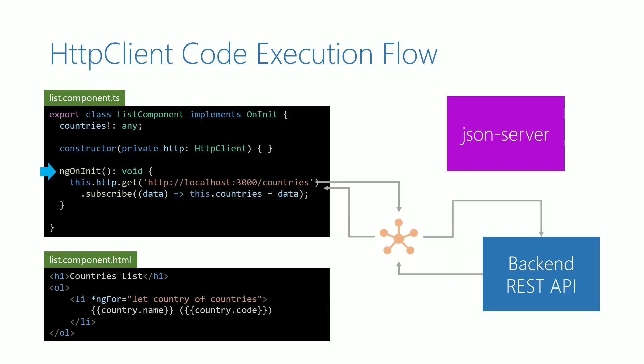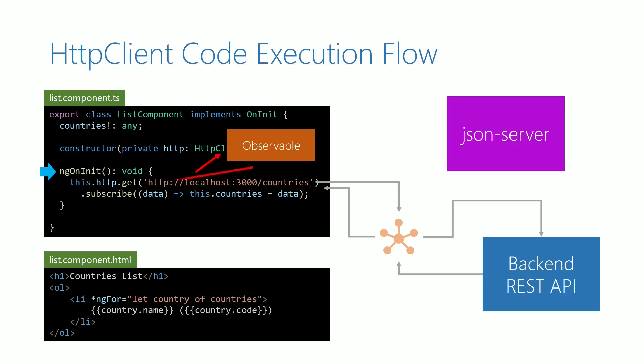To handle this network latency, the GET function returns an observable object. In the observable object, we are calling the subscribe function. The observable object and subscribe function make it possible that the program execution flow does not stop at this line when waiting for a response from the server.